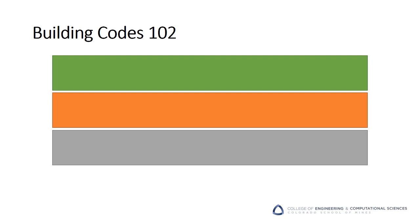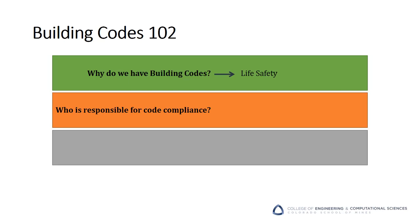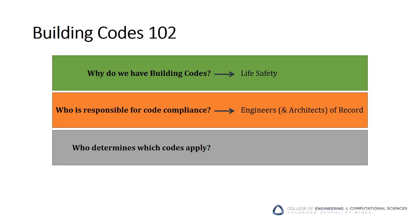Let's talk a little bit more about building codes. Why do we have building codes? The answer is life, safety, and the protection of human health. Who is responsible for code compliance? That's you — specifically, the engineers and architects of record. And who determines which codes apply?